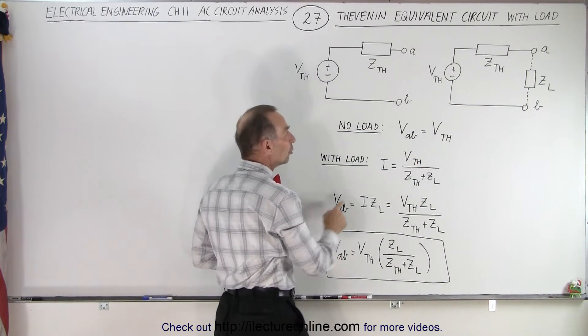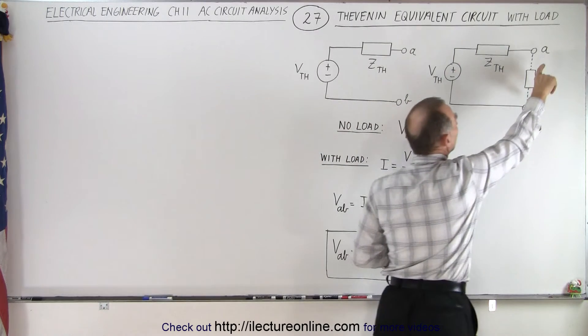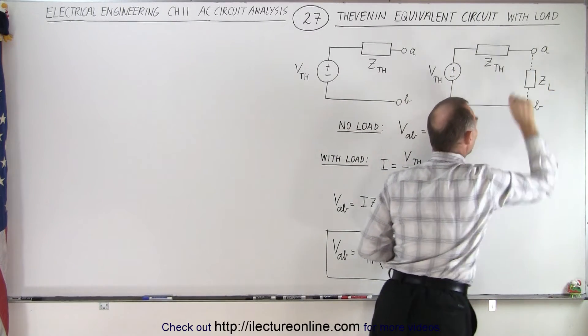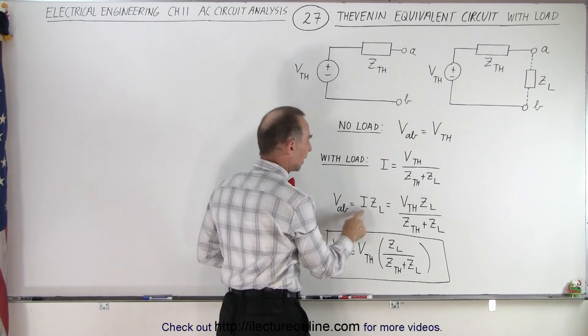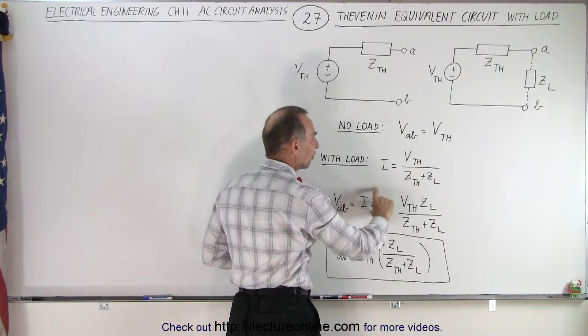And then to find the voltage from A to B with the load connected, that will be the voltage across the load. Notice you multiply the current times the impedance of the load.